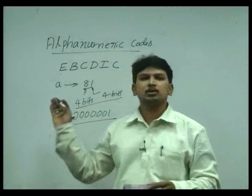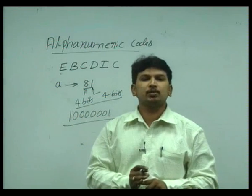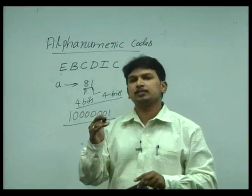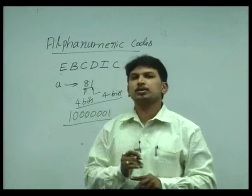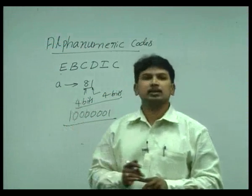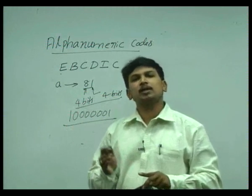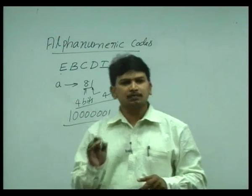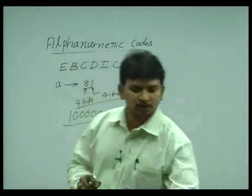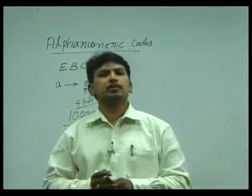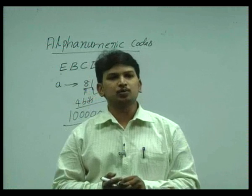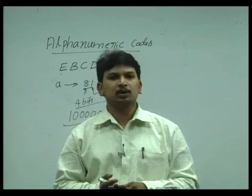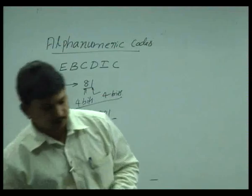So comparing EBCDIC code and ASCII code: ASCII code is an alphanumeric code and EBCDIC is also alphanumeric. There are two examples of alphanumeric codes. There are advantages and disadvantages between these two codes. One we use in personal computers; even nowadays we are using mostly this ASCII code when compared to the EBCDIC code.